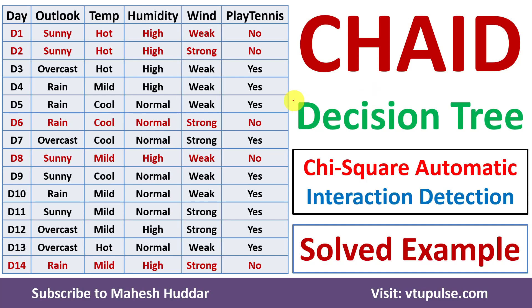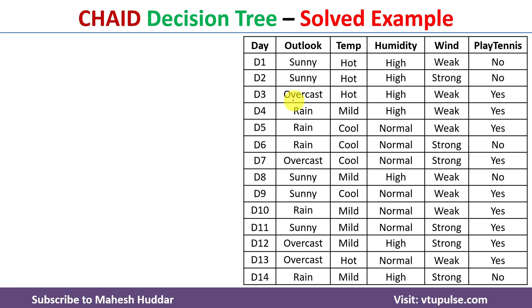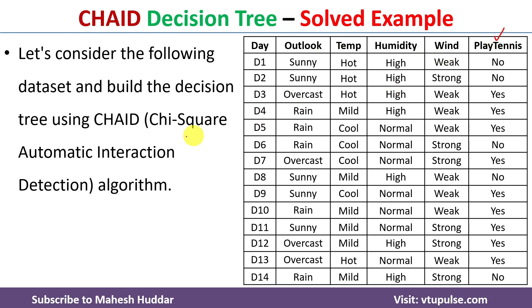Welcome back. In this video, I will discuss how to build a decision tree using the CHAID algorithm with the help of a simple solved example. In the previous videos, I have discussed how to build a decision tree using ID3, C4.5, and CART algorithms. Links for those videos are given in the description below. In this case, we have been given a dataset with 14 examples and 4 attributes, where 'latent' is the target variable. We need to apply CHAID — that is, chi-square automatic interaction detection — to build the decision tree.